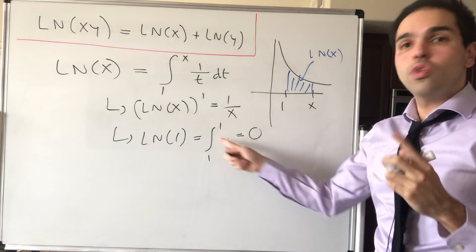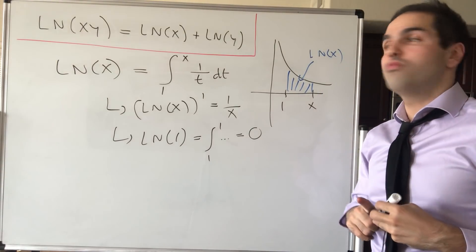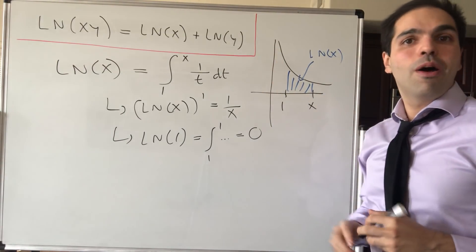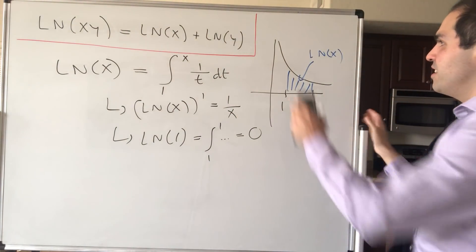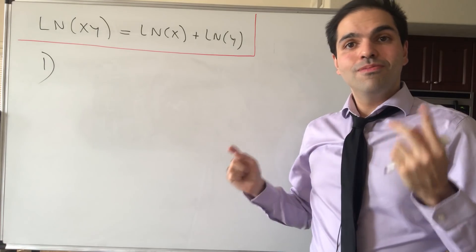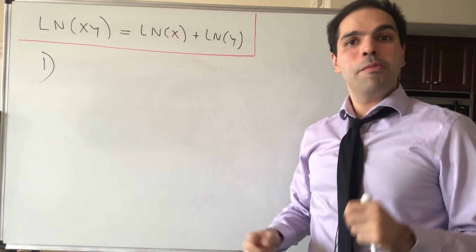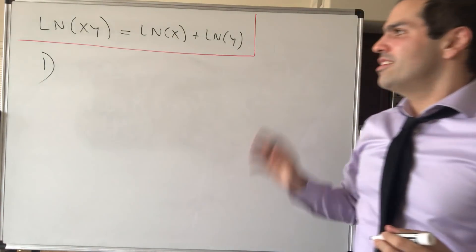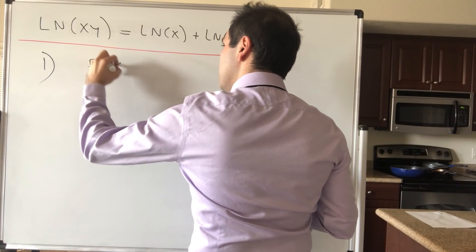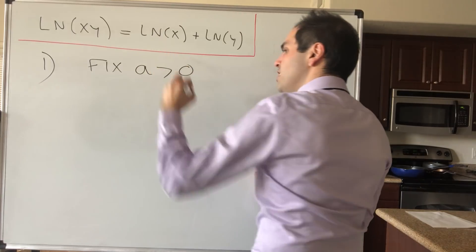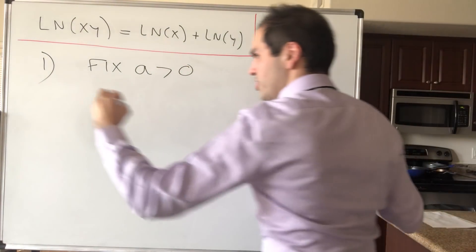So using just those two properties we will prove all those properties of ln. And let's start indeed with this multiplicative one. And to prove this property we will use nothing other than the chain rule. So for this fix some constant a.